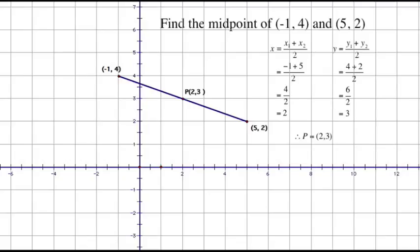6 over 2 equals 3. So therefore the midpoint has the coordinates (2, 3).